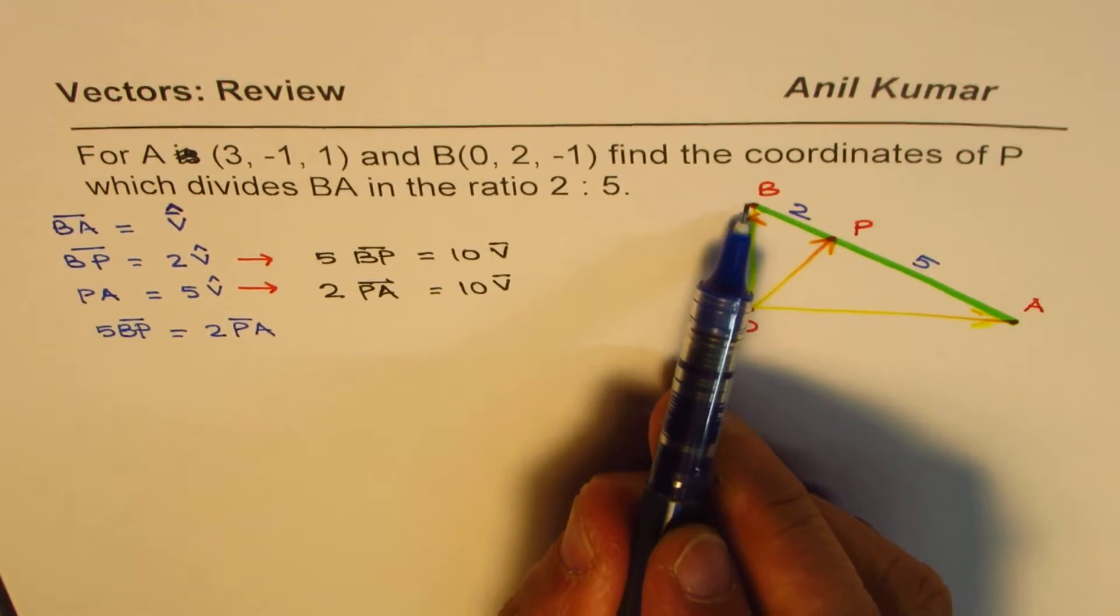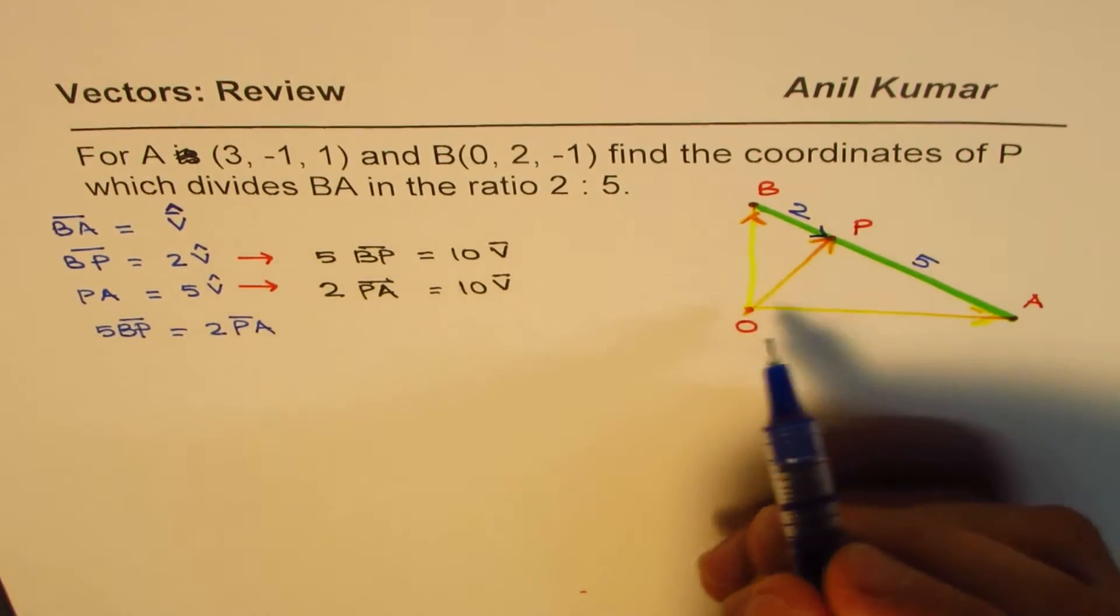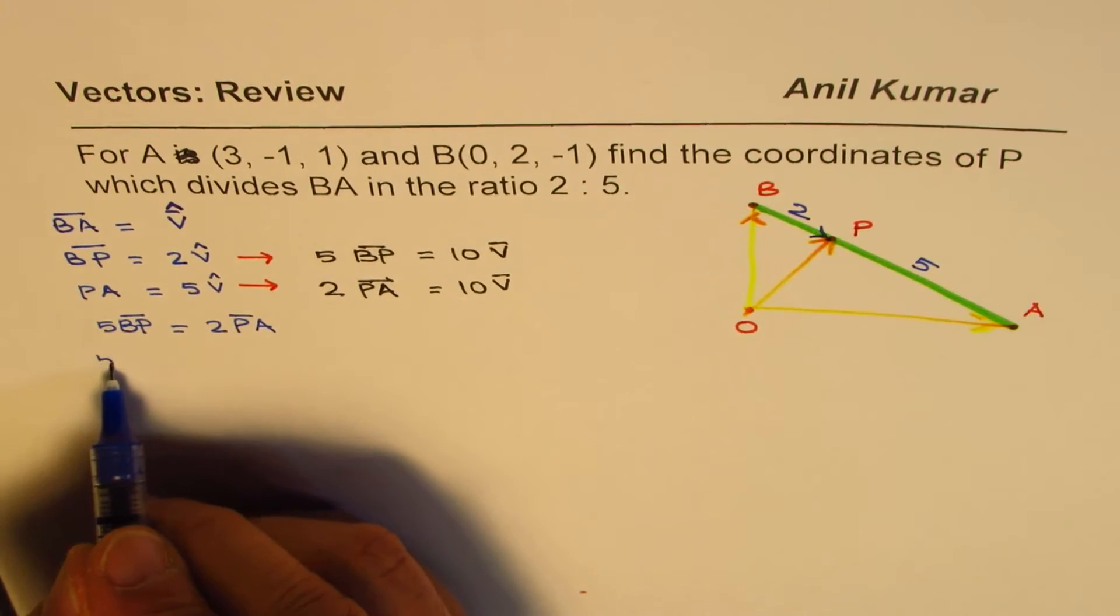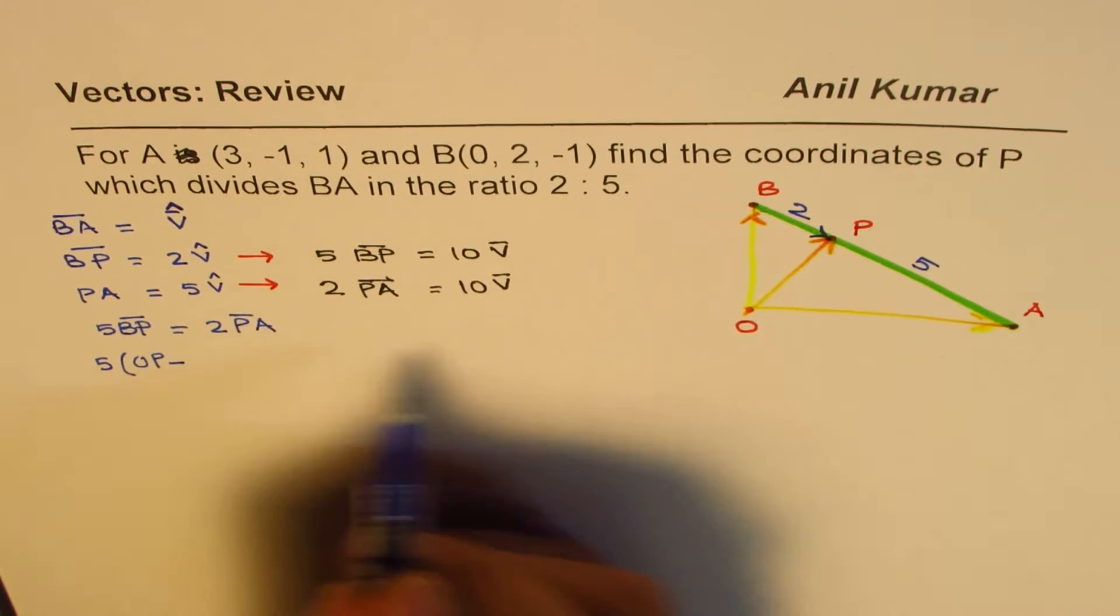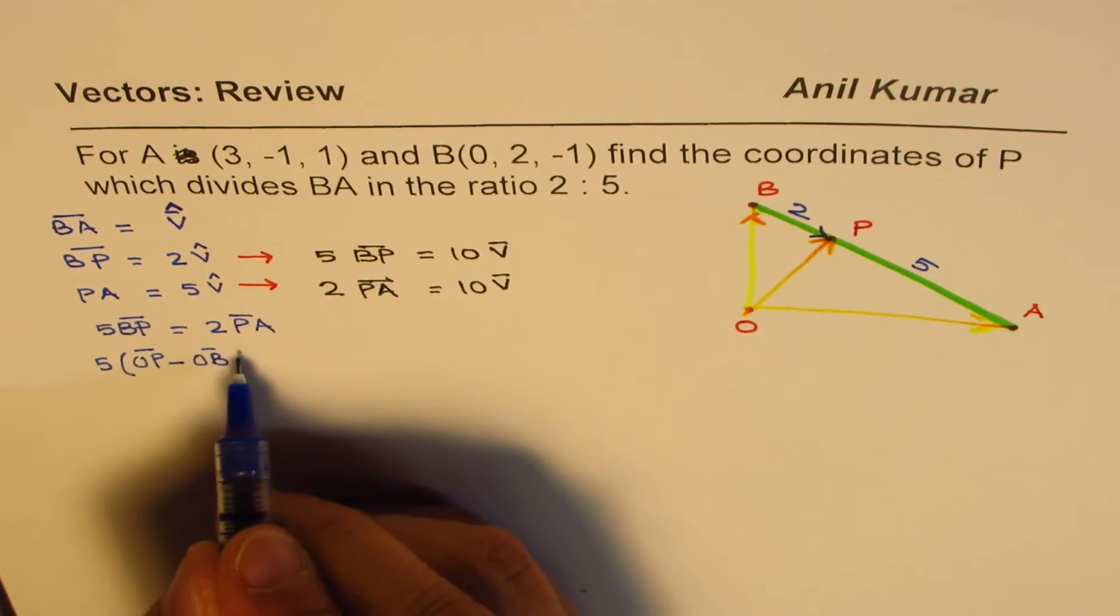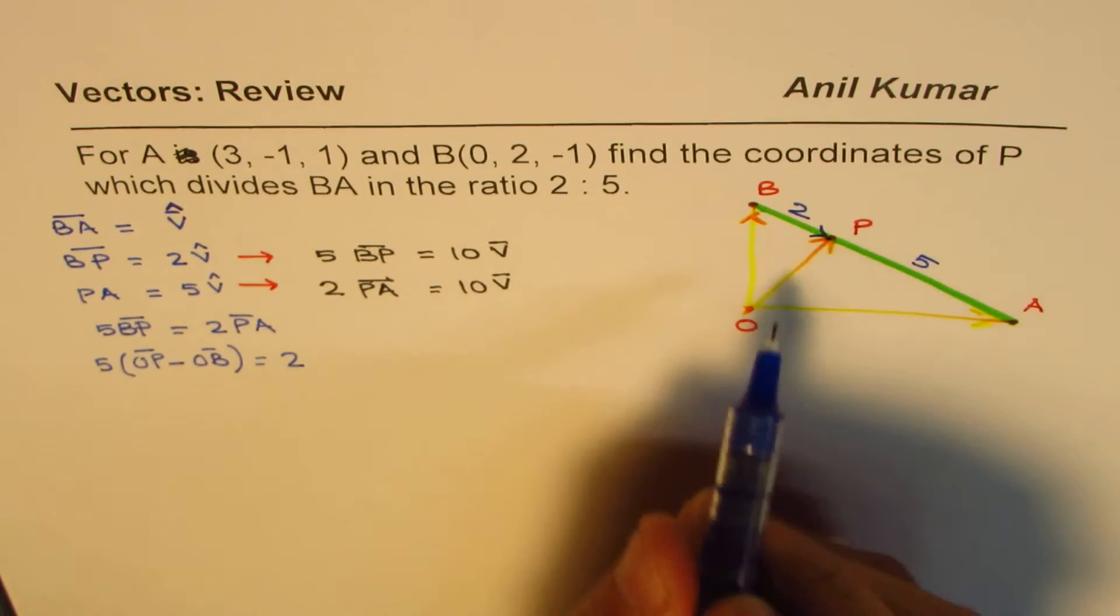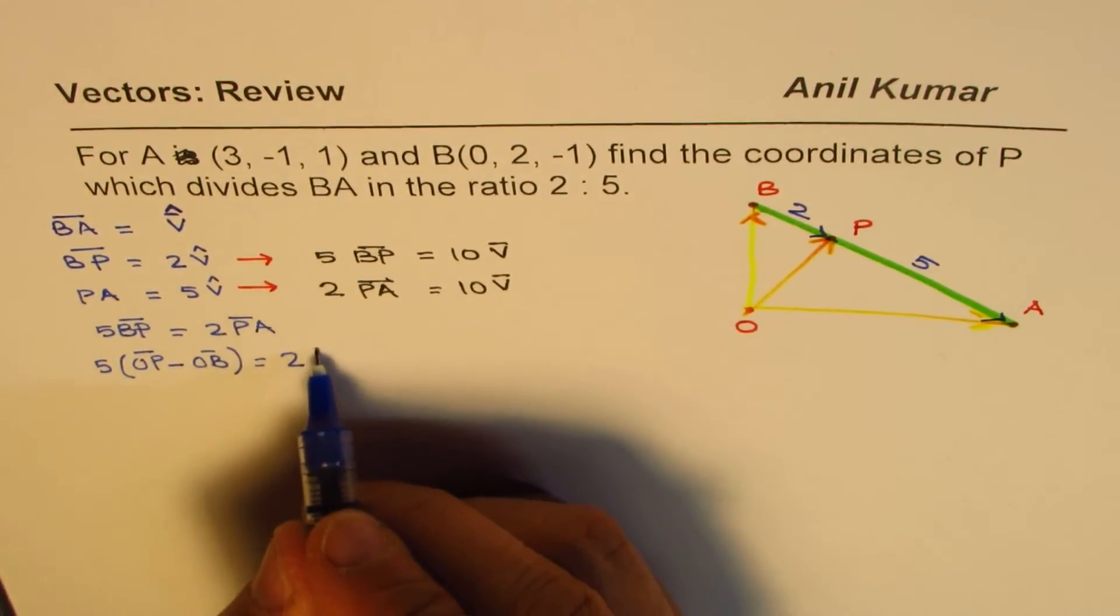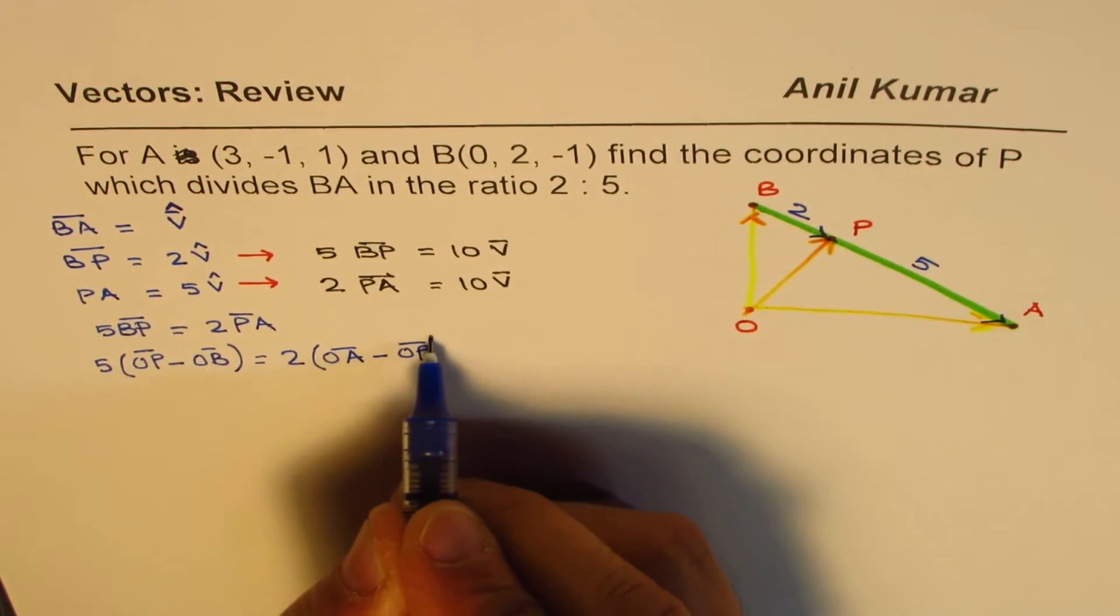Now, what is BP? B to P, we're talking about this now, BP, is OP minus OB. So I can replace BP by 5 times OP minus OB. So we have related this in terms of position vectors. Do you see that beauty? PA, so P to A is OA minus OP. So 2 times OA minus OP.